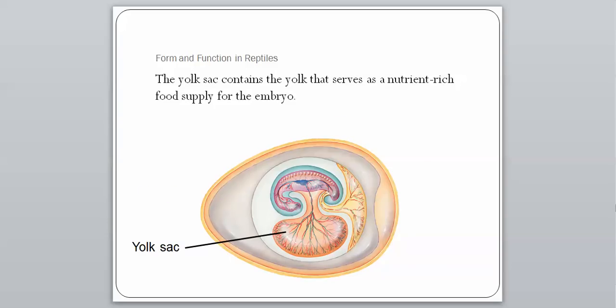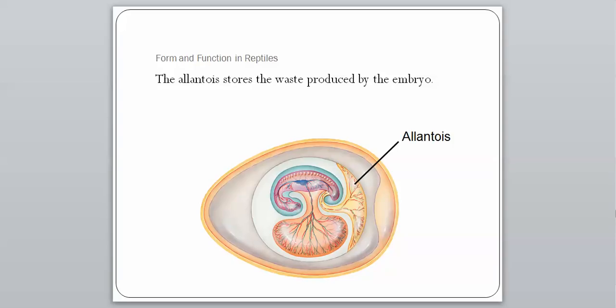The yolk sac contains the yolk, which serves as a nutrient-rich food supply for the embryo — the function of yolk is basically to provide food for the developing embryo, and that big red mass in the picture is the yolk sac. The allantois stores the waste produced by the embryo; without it, the embryo would essentially poison itself. It stores that waste until the embryo is ready to hatch. The outer peach-colored layer is the leathery shell.